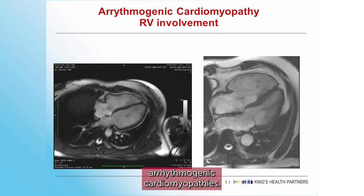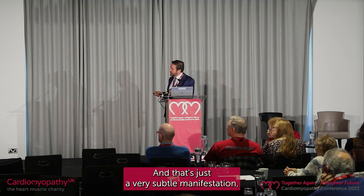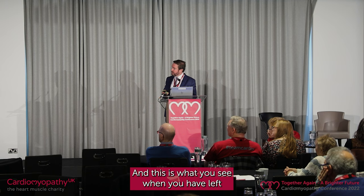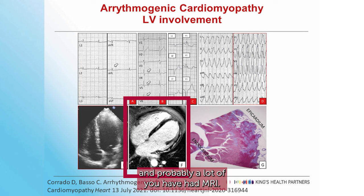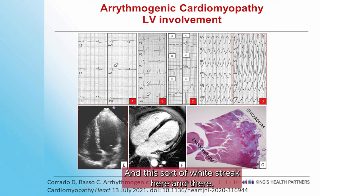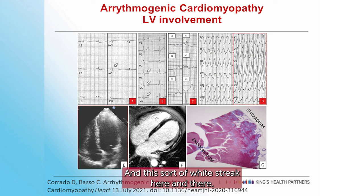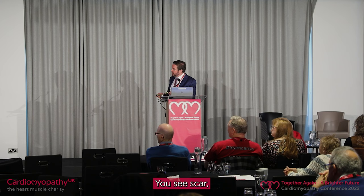When you have one of these arrhythmogenic cardiomyopathies — this is the right side of the heart — you can see it's hardly pumping at all. That's a very extreme example of right ventricular predominant cardiomyopathy, and that's a very subtle manifestation which you often see when you screen families. With left-sided involvement on MRI, they often give you an injection of gadolinium — a dye that picks up scar in the heart. That white streak is what scar looks like on MRI. You see scar and a propensity to fast heart rates.